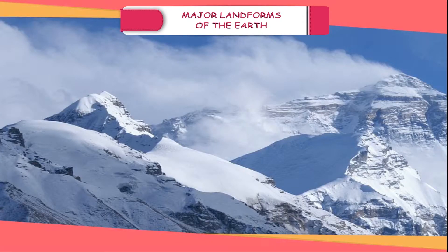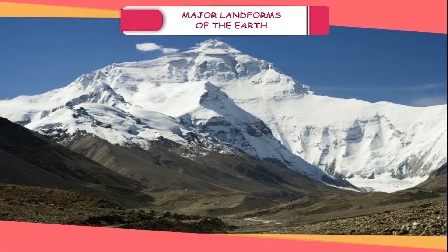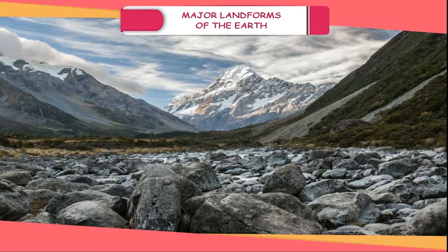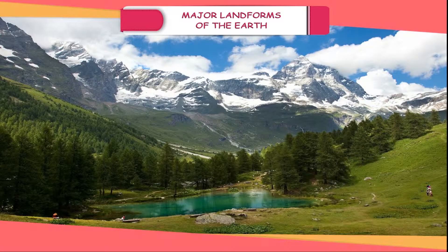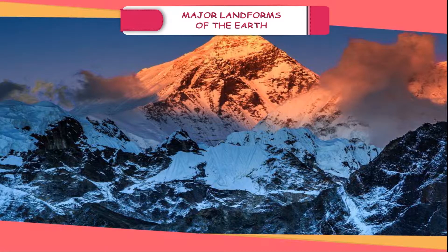The mountains are the elevated part of the Earth which have marked slopes and peaks. A mountain can be defined as any natural elevation of the Earth's surface that is considerably higher than the surrounding area. Mountains vary in size, shape and height. Some are old and some are young. On the basis of their origin, mountains are classified into three main categories.